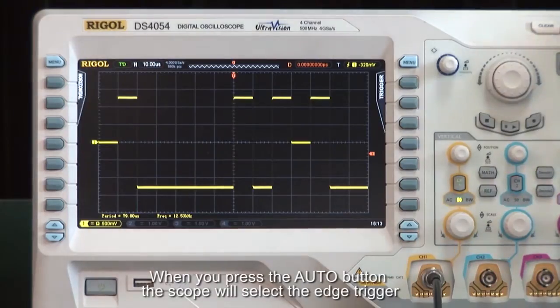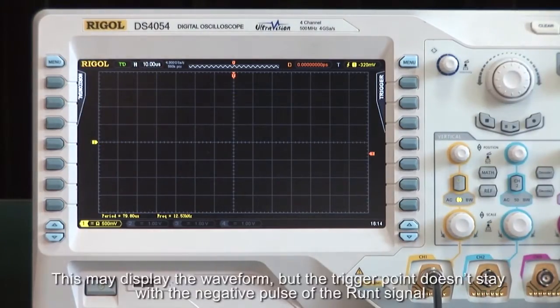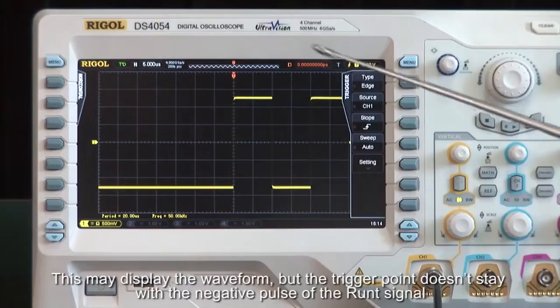When you press the Auto button, the scope will select the edge trigger. This may display the waveform, but the trigger point doesn't stay with the negative pulse of the Runt signal.